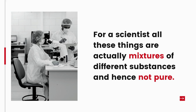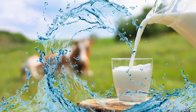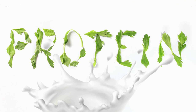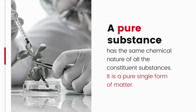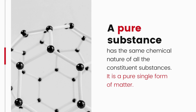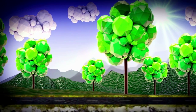But for a scientist, all these things are actually mixtures of different substances, and hence not pure. For example, milk is actually a mixture of water, fat, and protein. When a scientist says that a substance is pure, it means that all the constituent particles of that substance are the same in their chemical nature. A pure substance consists of a single type of particles. In other words, a substance is a pure single form of matter.